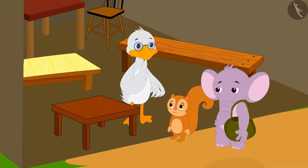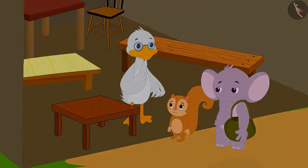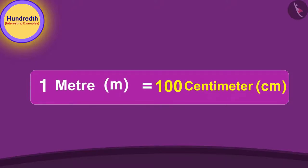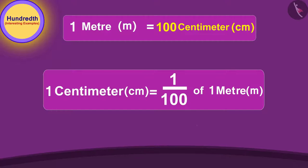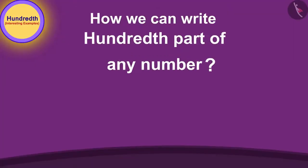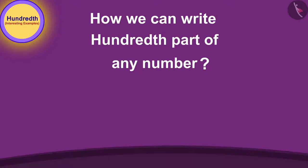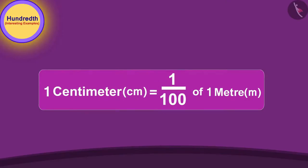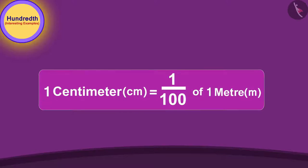Chanda dear, I will explain to you. Tell me, how many centimeters is one meter? One hundred centimeters! Exactly! It means one centimeter is one hundredth part of a meter. Let me tell you how we can write the hundredth part of any number using a decimal point. A centimeter is one hundredth of a meter — here we are dividing one by one hundred.